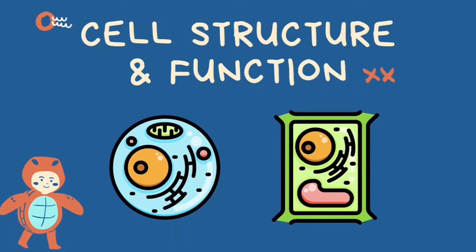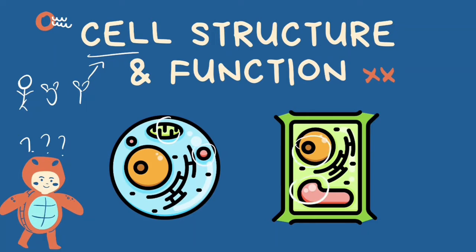First of all, before we get started, it is important to know what exactly a cell is. A cell is the basic unit of all life, which means all living things like humans, animals and plants are all made up of cells. Cells are made up of subcellular structures that form their own specific functions. All these subcellular components are known as organelles.